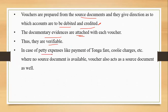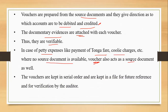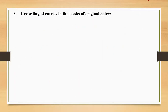In case of petty expenses like tonga fare, auto-rickshaw fare, or coolie charges, source documents are not available. In such cases the voucher itself acts as a source document, since every firm has its own printed vouchers. Vouchers are kept in serial order in a file for future reference and verification by the auditor, who will need both source documents and vouchers when checking the books at year end.